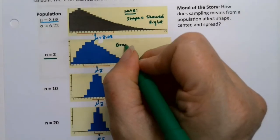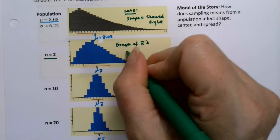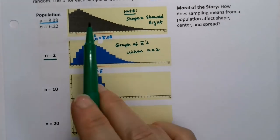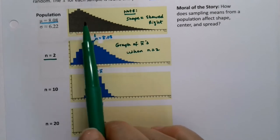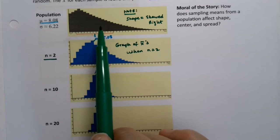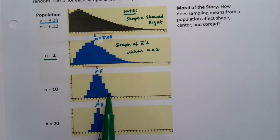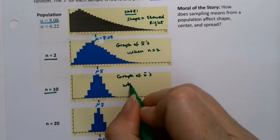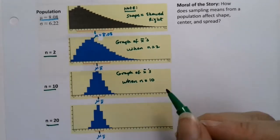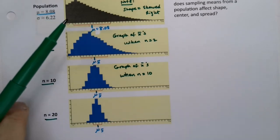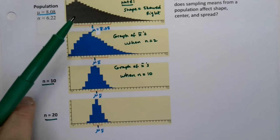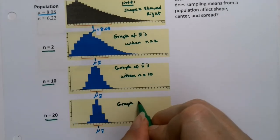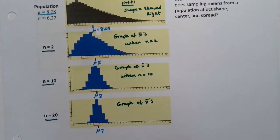Down here, imagine you take 10 random individuals from this population, find their X-bar, then do it again and find their X-bar, and do it again, and plot all those X-bars — so this is a graph of the X-bars when n equals 10. And lastly, take 20 individuals at random, take their X-bar and plot it, take another 20, take their X-bar and plot it, and so on — giving you a graph of X-bars when n equals 20.